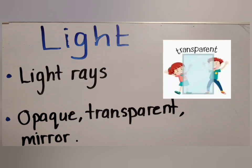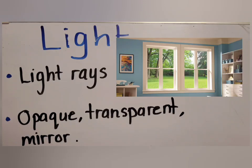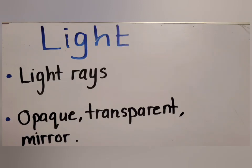The second type is the transparent object. Transparent objects allow light to pass through them, which means that if I'm standing behind a transparent object, I can see what's happening in front of it. For example, if I'm standing behind a window, I can see what's happening on the other side because the window is transparent and allows light to pass through.